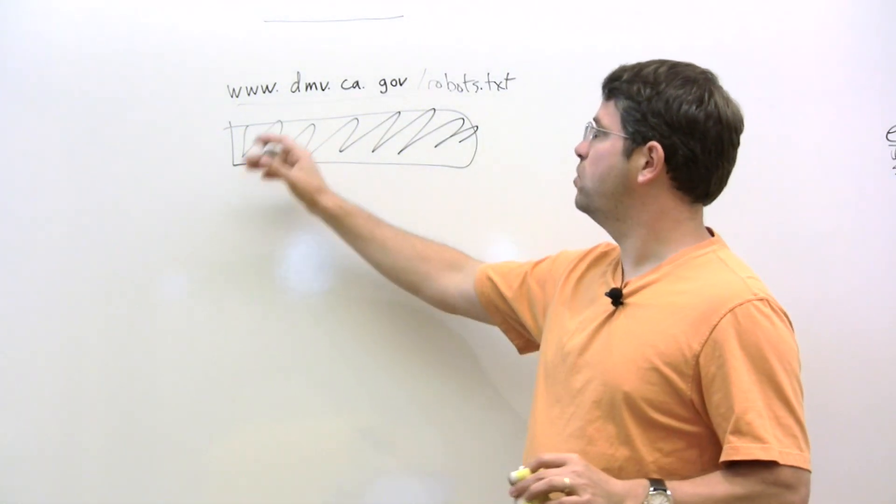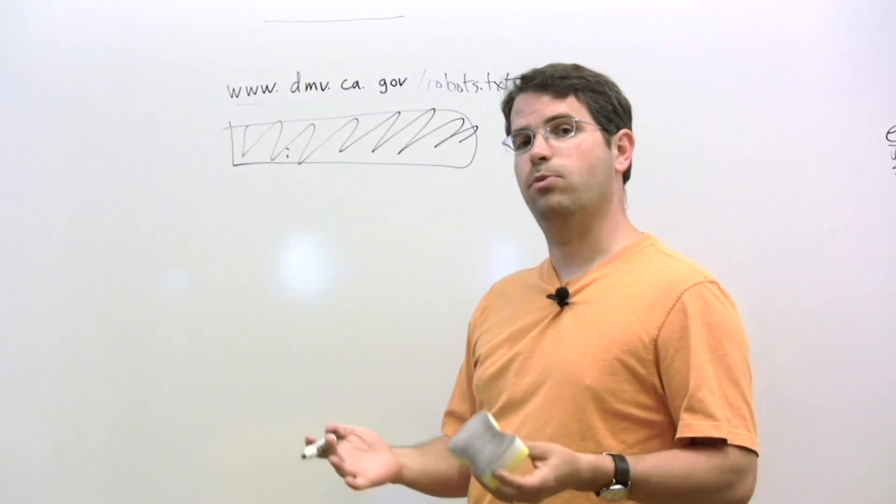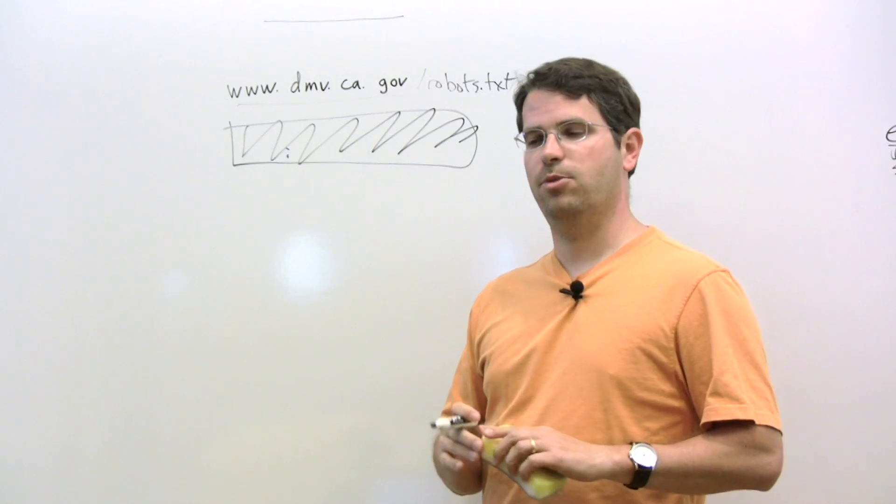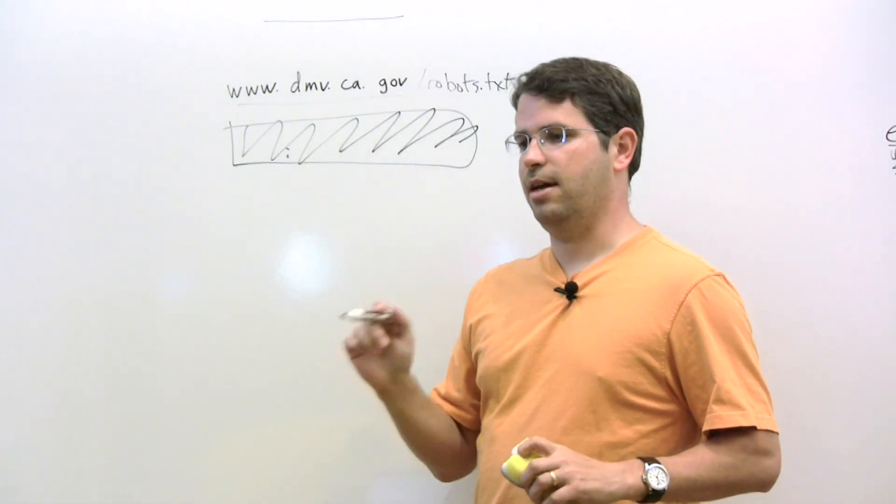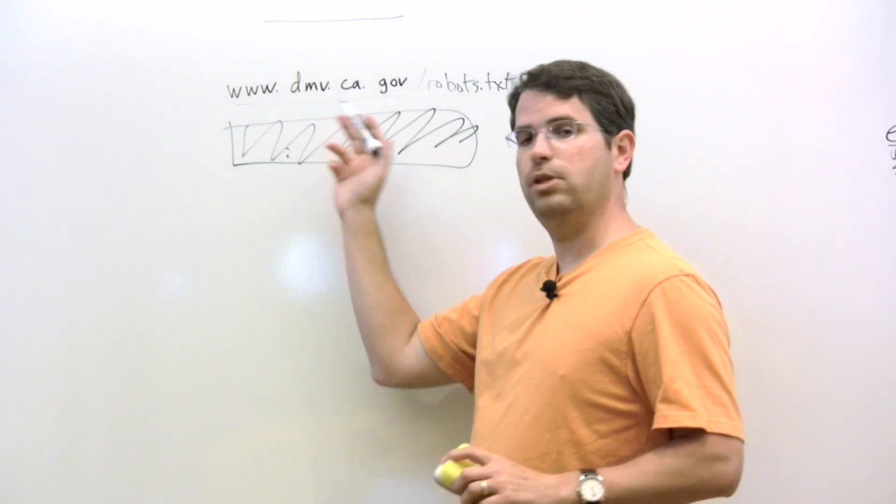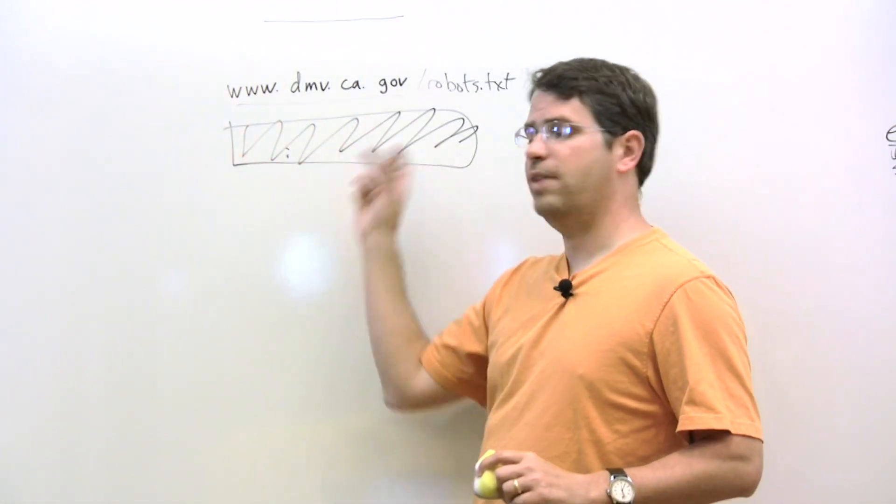But it turns out for users, being able to return these uncrawled URLs can be very useful. That's the reason why we do it. And most of the time, probably 90% of the time, when someone says you're violating my robots.txt, you've clearly crawled these pages, what's really happening is we're able to return that uncrawled URL reference. And so that's what's going on.